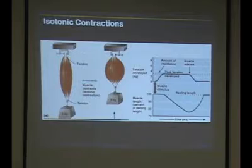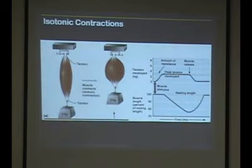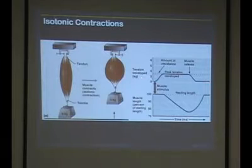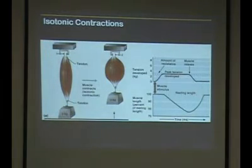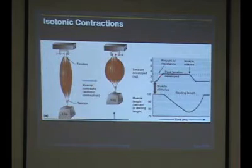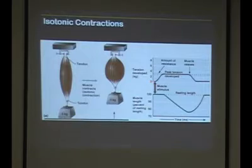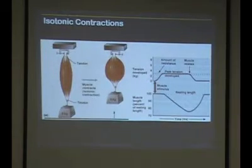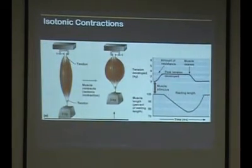If we go from this position to this one, what kind of contraction is that? Concentric. In isotonic contraction, the amount of tension developed stays the same but the muscle changes in length, then relaxes. So there's no tension at rest, then it develops tension that stays the same, and then relaxes.